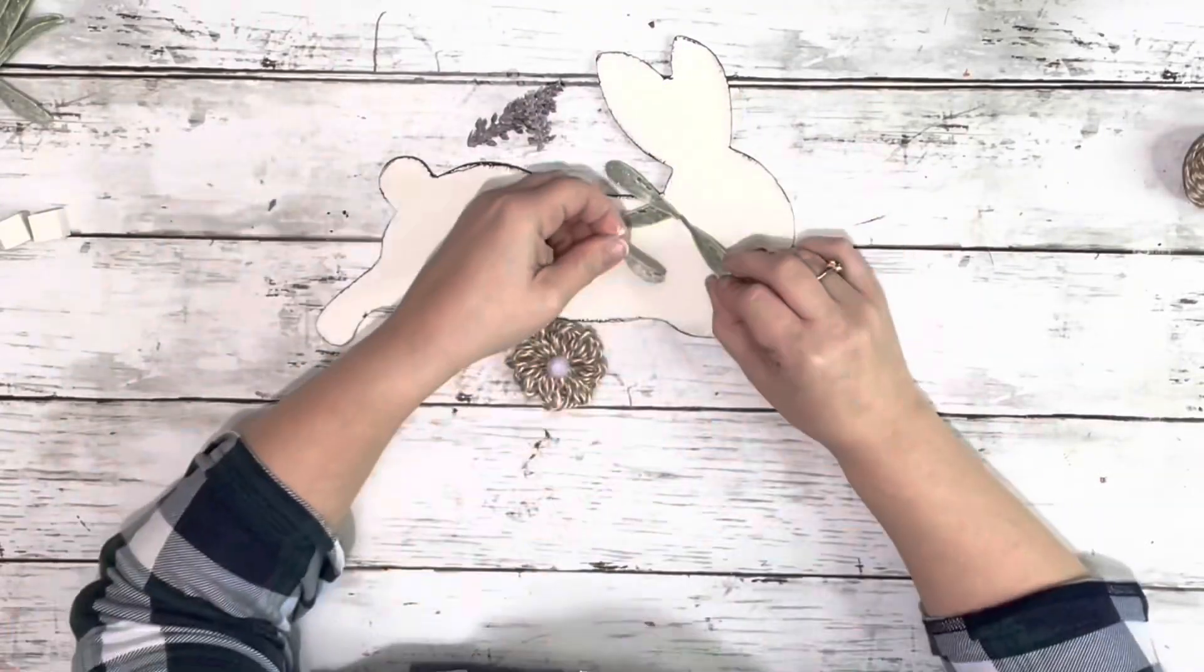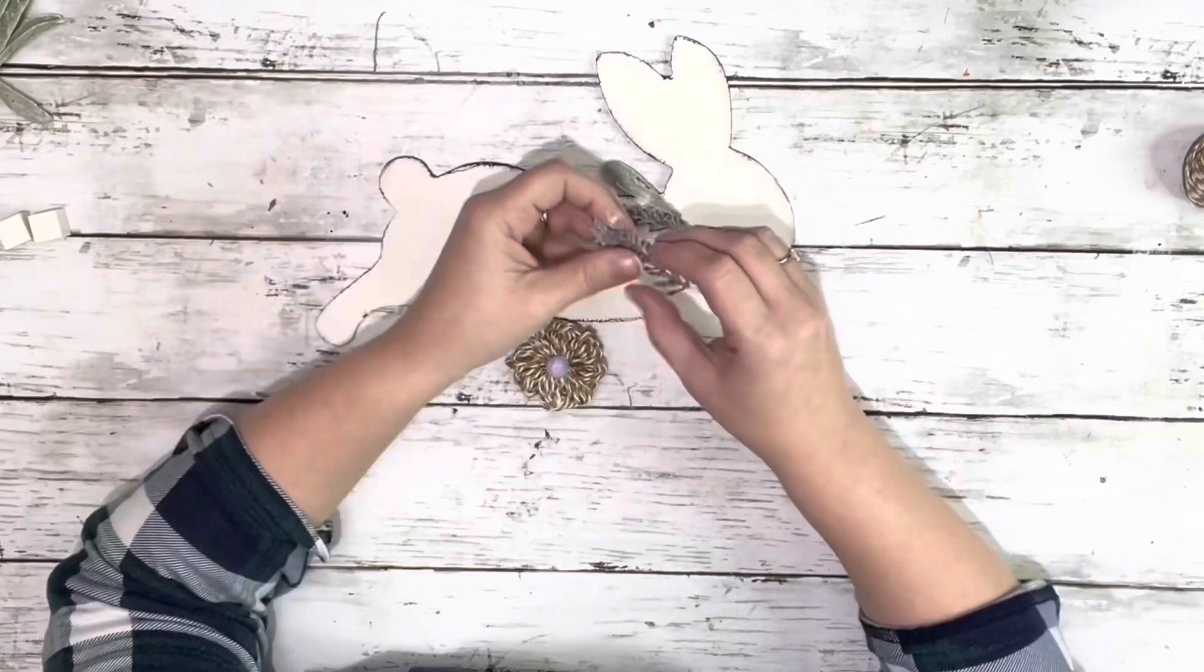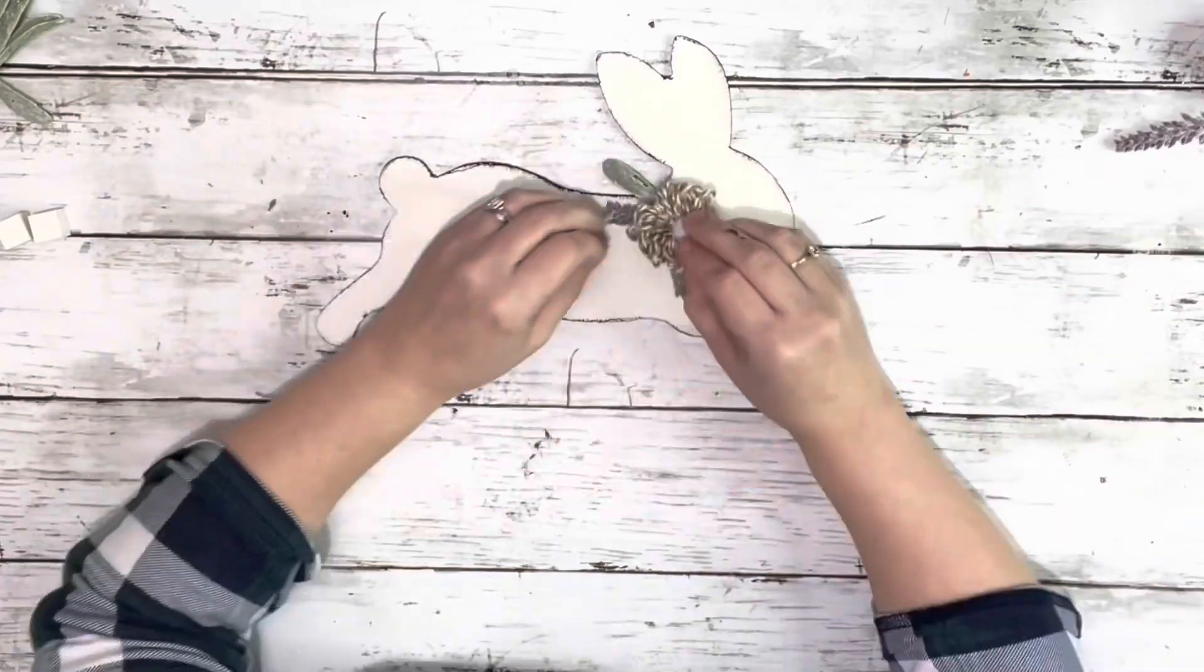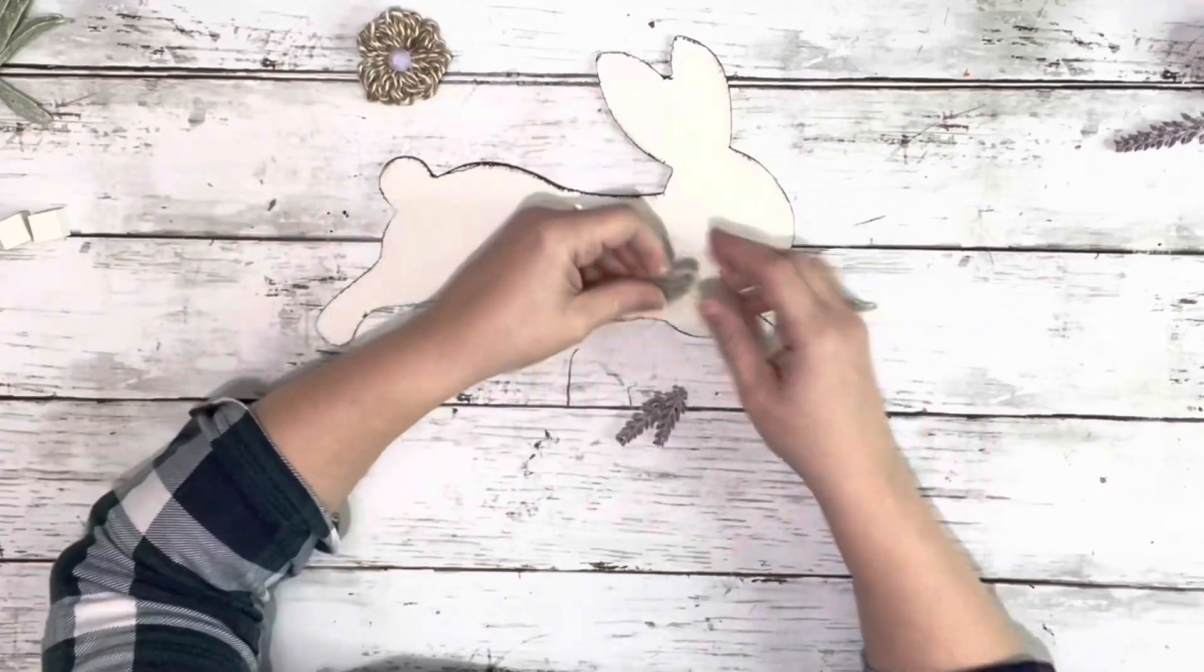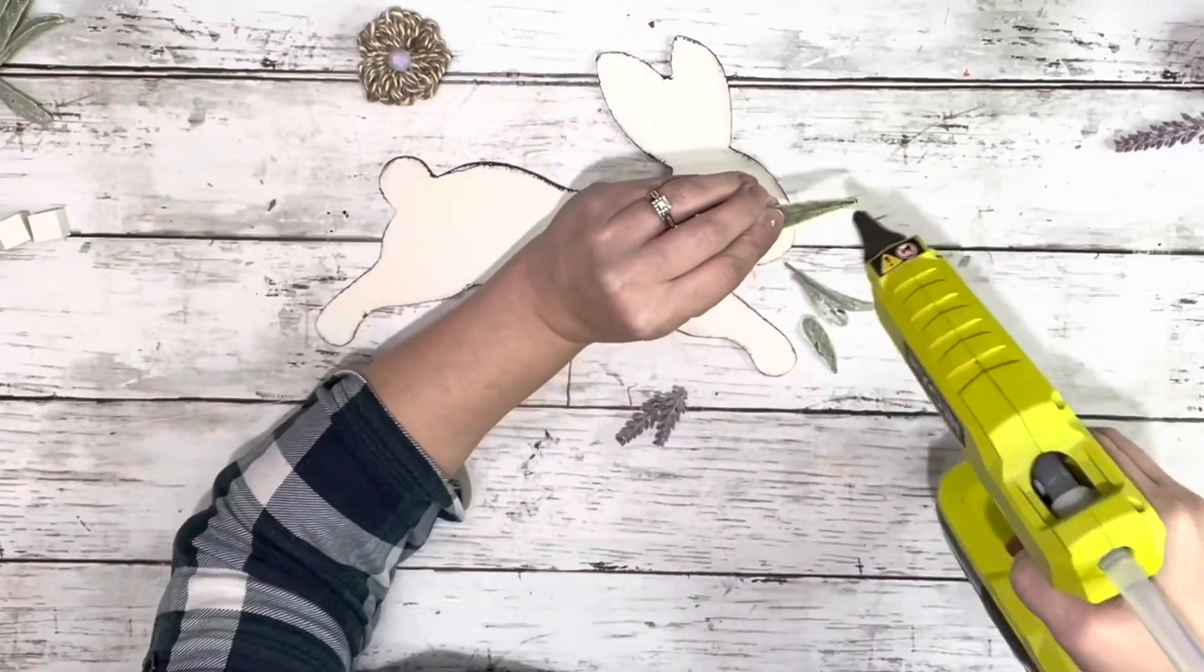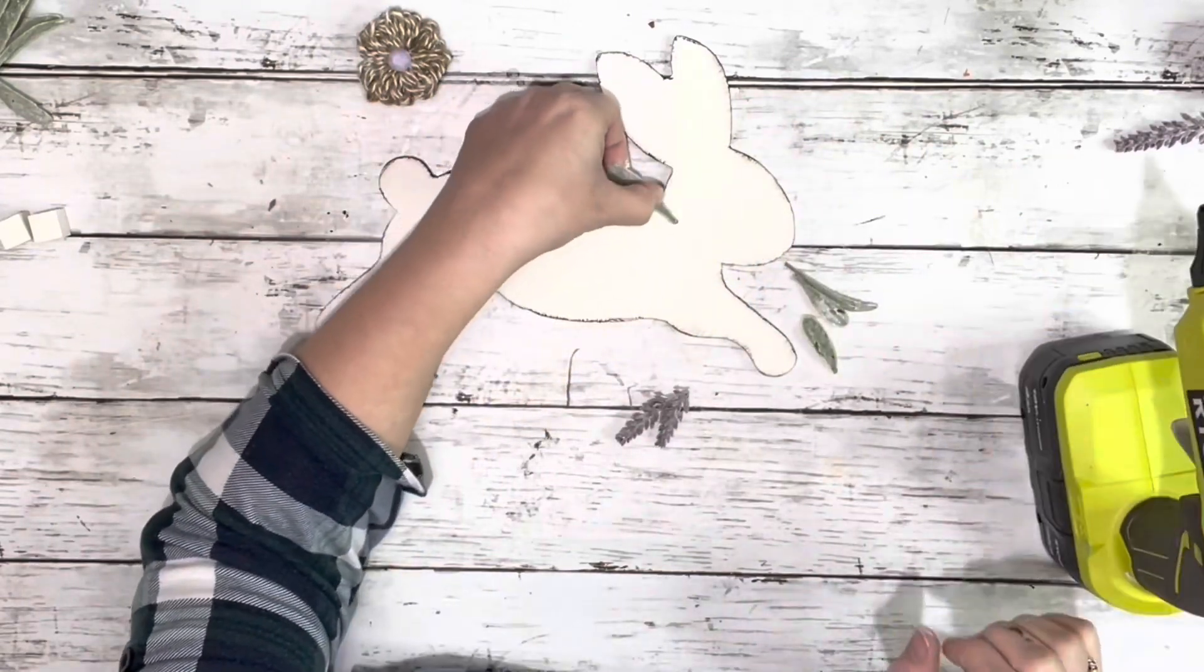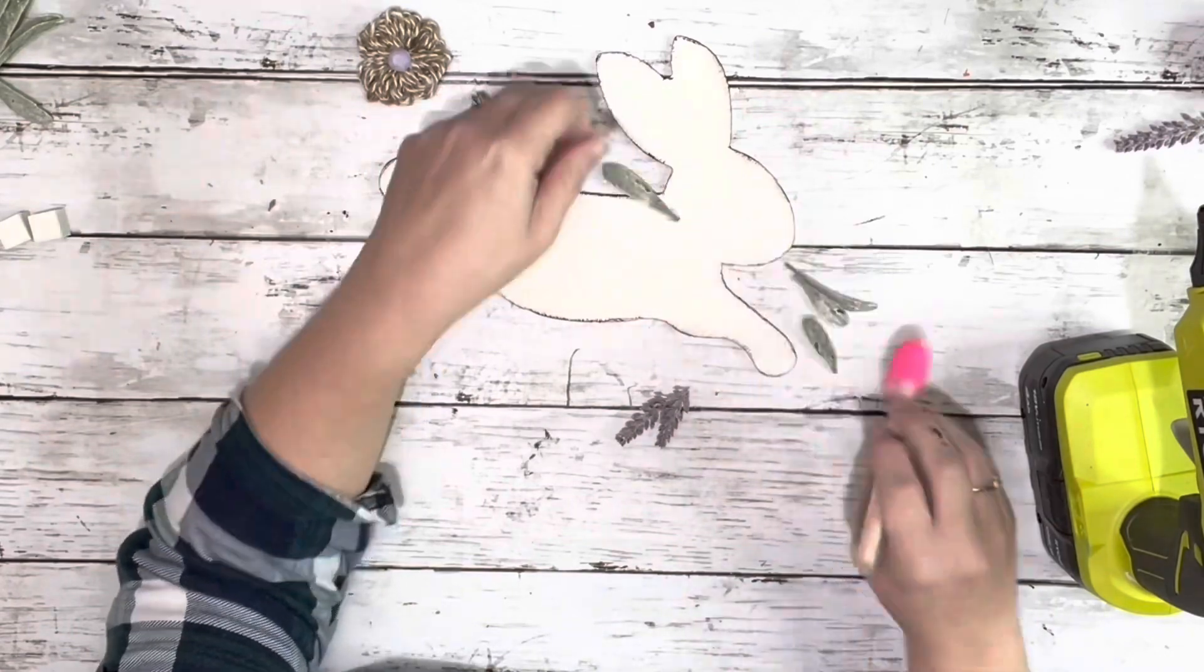I had this lavender pick I got from Dollar Tree, so I just pulled a couple of the leaves off of it and then a couple of pieces of lavender. I saw where I wanted it to go on the bunny's neck and just hot glued those pieces down, and then hot glued the flower right on top of those.